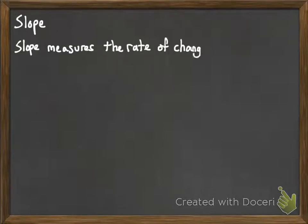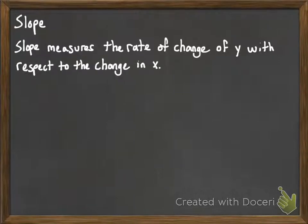All right, so now we're going to start to talk about the idea of slope of a line. First off, slope is a numerical measure that actually looks at the rate of change of the y variable with respect to x.